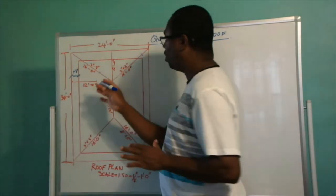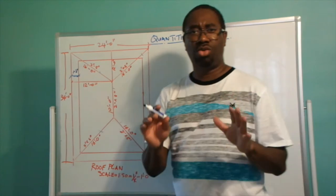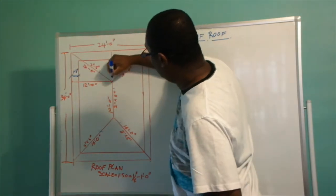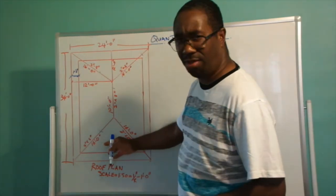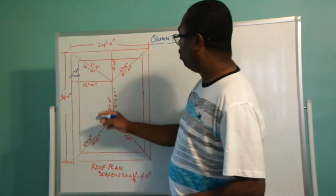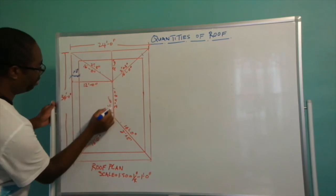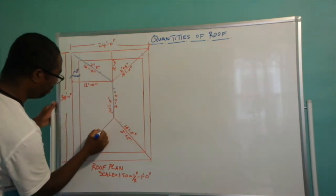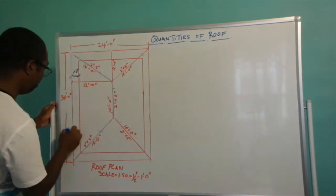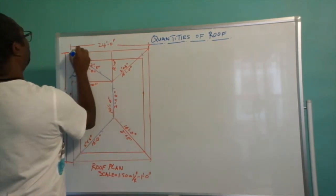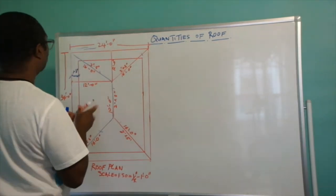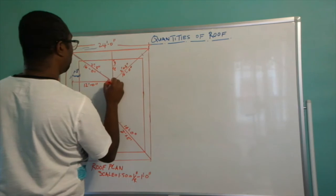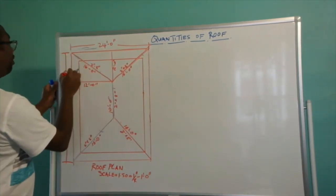If you look at this roof in detail, you are observing two main shapes. You are observing a triangle — this triangular portion is at each end — and you are also observing a trapezium, which is the trapezoidal portion on each side. So the roof is made up of two triangles and two trapezoids.